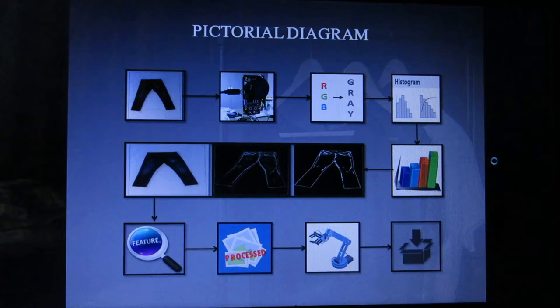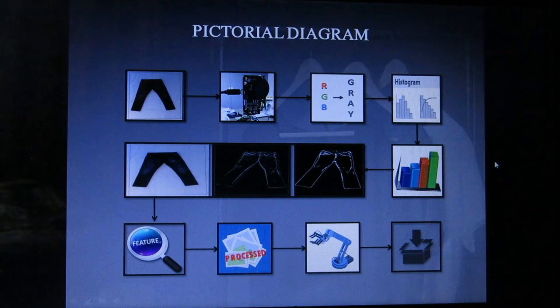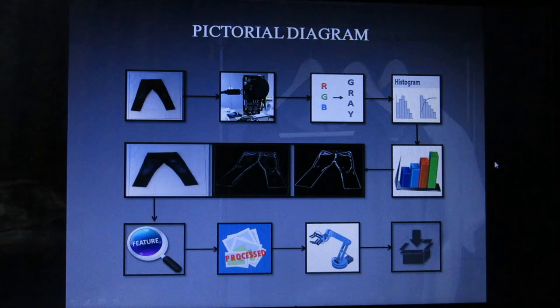In addition, the system being formed is portable. Here is the pictorial diagram. First, the garment will be given as input, cameras will then acquire the image. Afterwards, the colored image will be converted into a grayscale image for the simplification of computations. The histogram was plotted and equalized to get the idea of the number of pixels against every grayscale level.